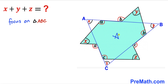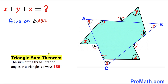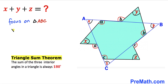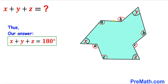Now let's focus on triangle ABC. We can see its interior angles are x, y, and z. Let's recall the triangle sum theorem: the sum of three interior angles in a triangle is always equal to 180 degrees. So therefore the sum of all three interior angles x, y, and z is going to be equal to 180 degrees. Therefore, angle x plus angle y plus angle z equals 180 degrees.